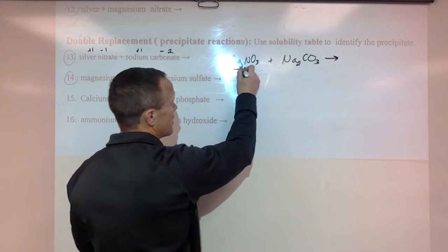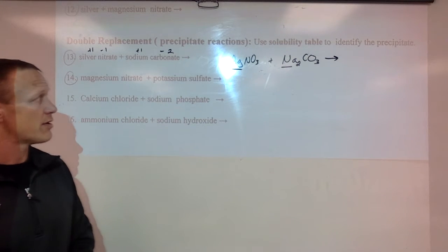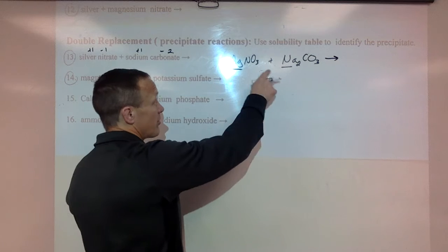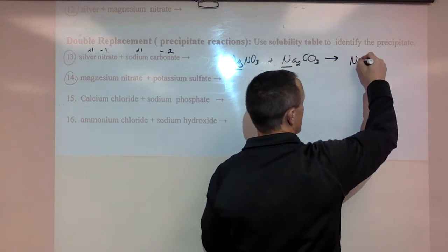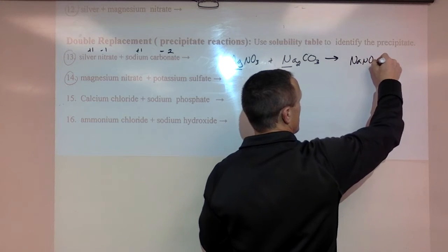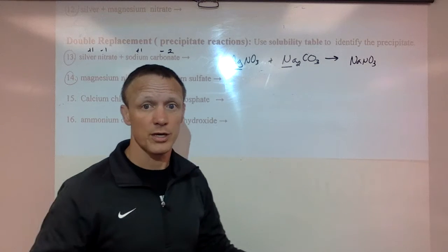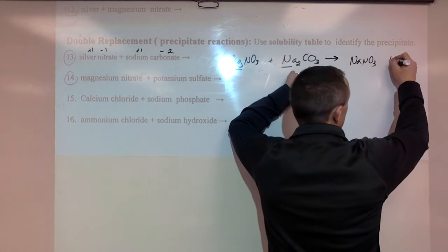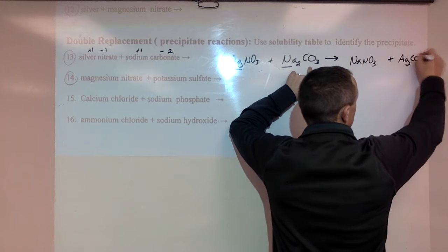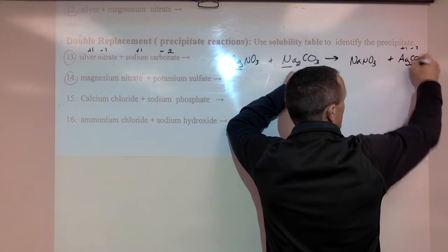So again this and this switch places. The silver and the Na switch places. So the Na comes over here with the NO3, Ag over there with the CO3. So Na with NO3. You do have to look up your charges again. It's a plus one and a minus one so we're good. And then the Ag goes with the CO3. Plus one minus two so we need a little two here with our Ag.